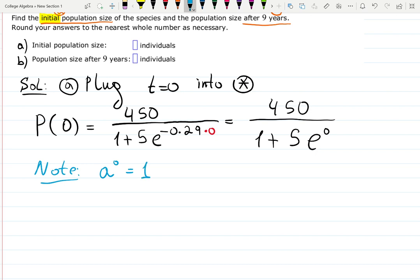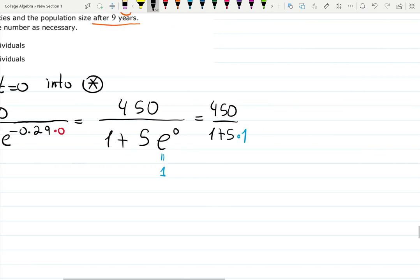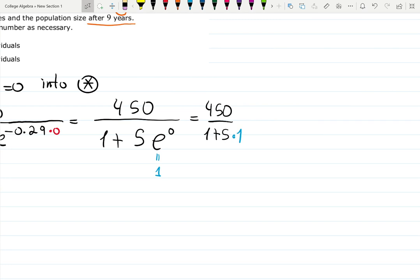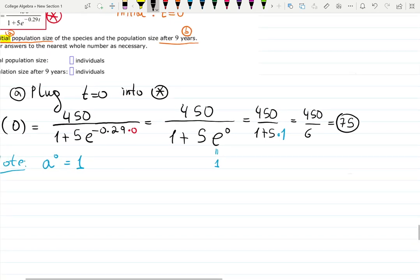Whatever a is, in this case a is e. So we're going to have 450 all over 1 plus 5 times 1 because e to the zero is one. That's 450 over 6. 450 over 6. That's 75. That's the answer for the first question.